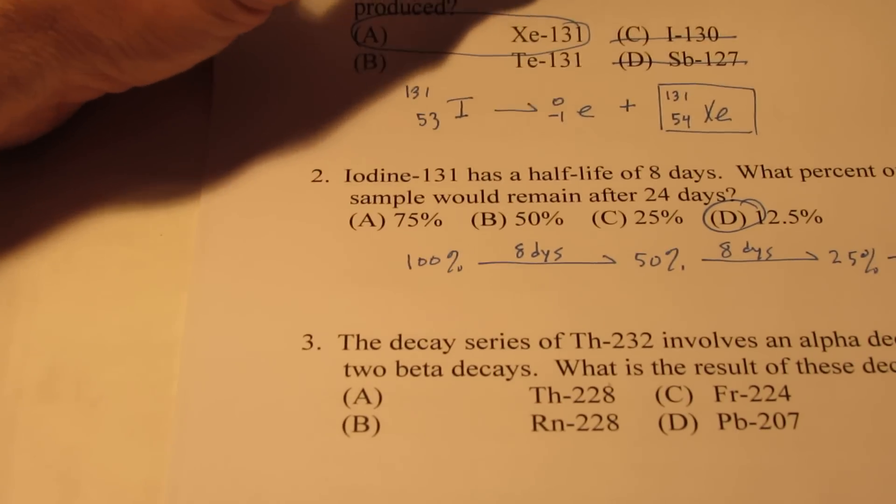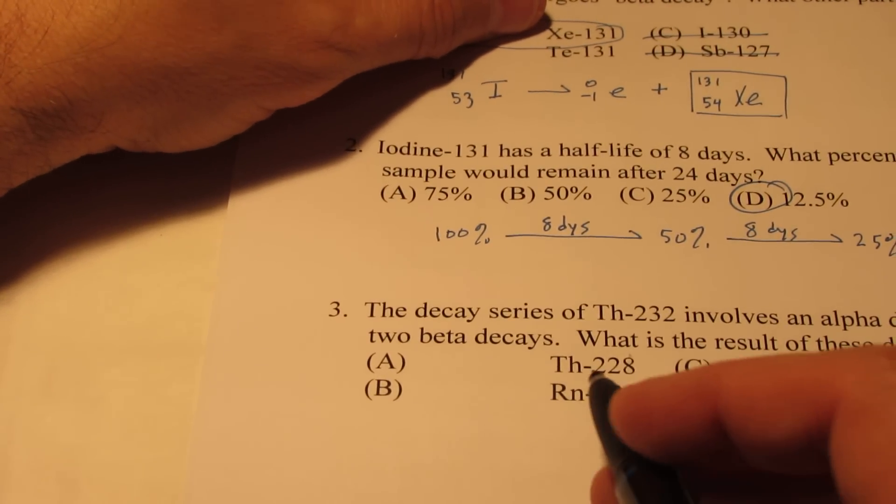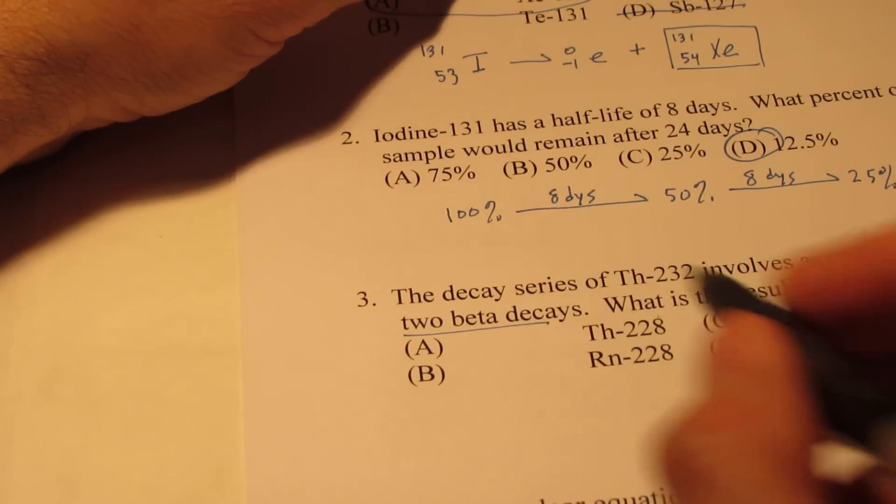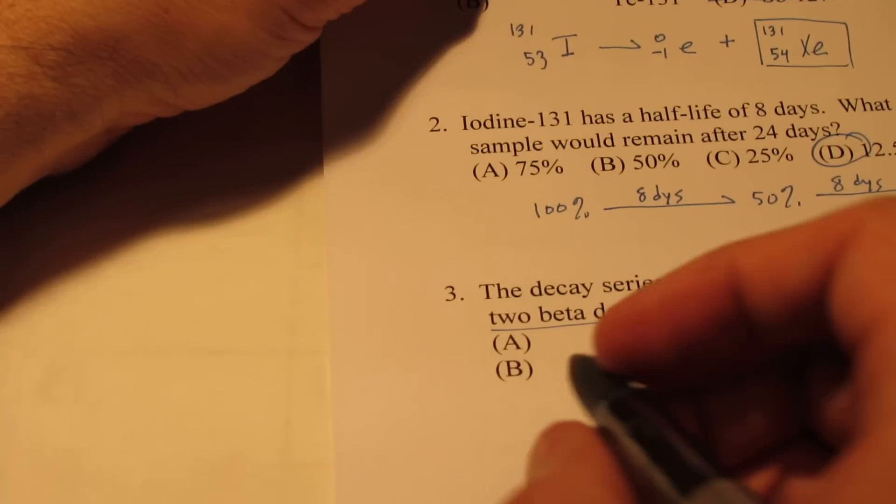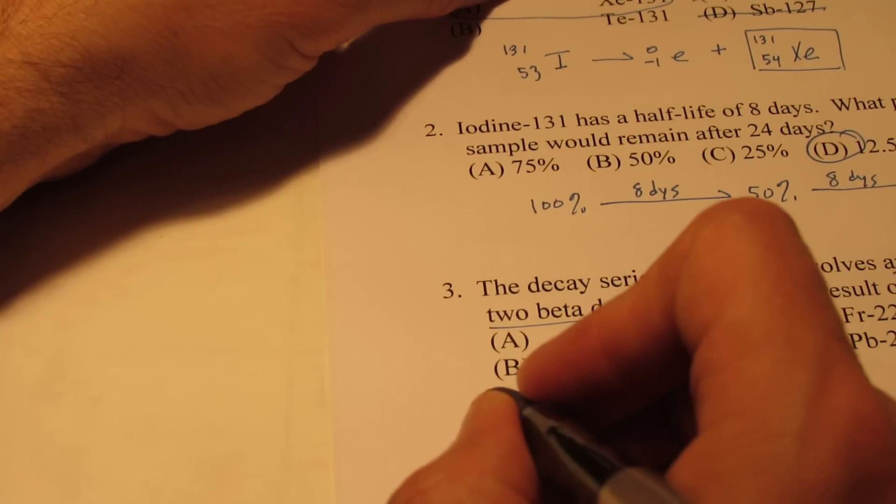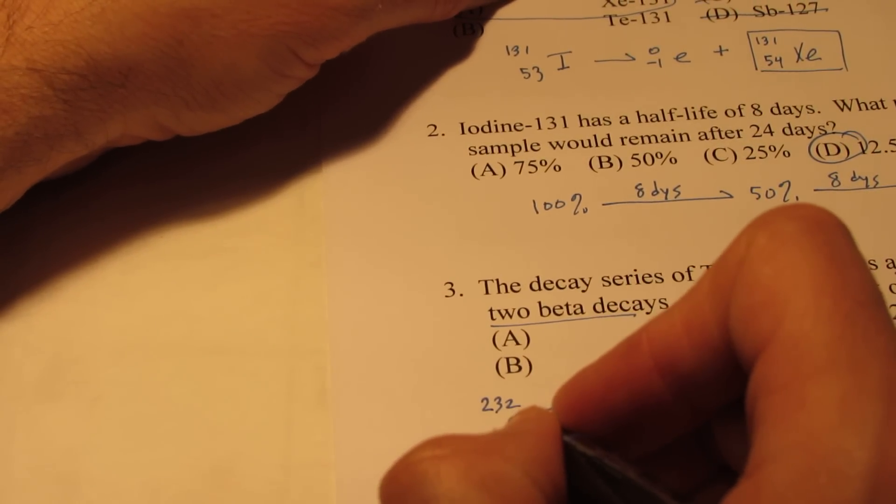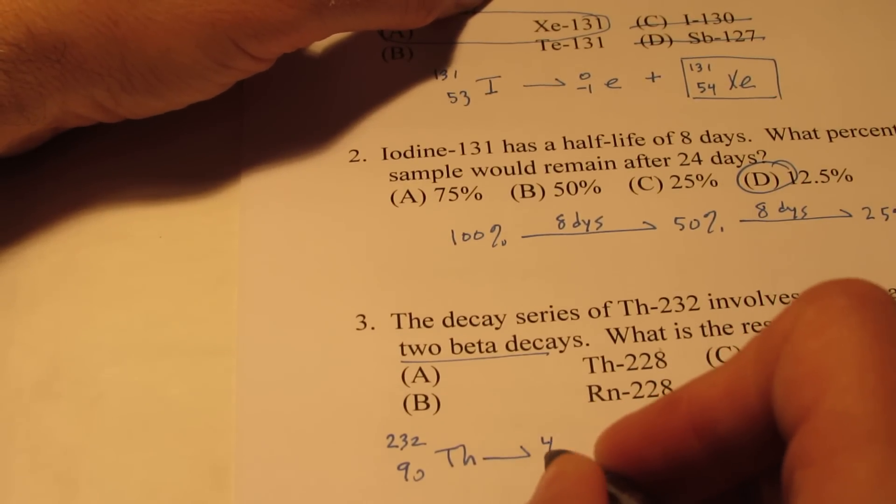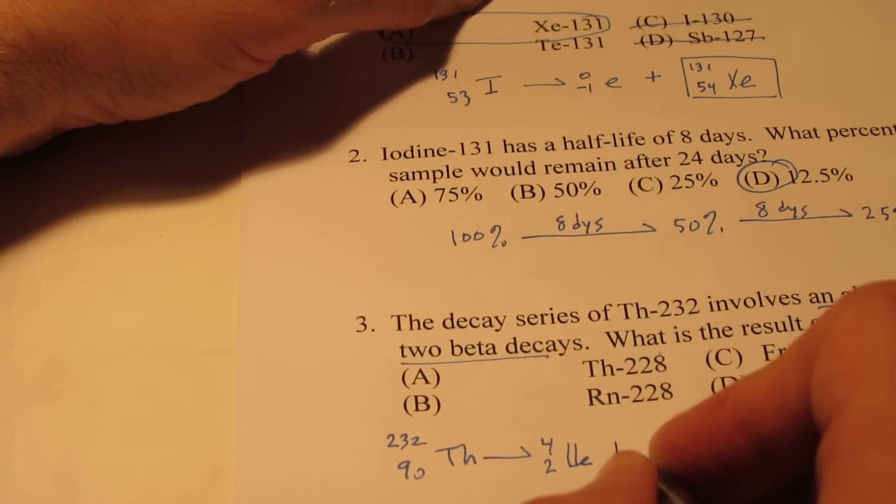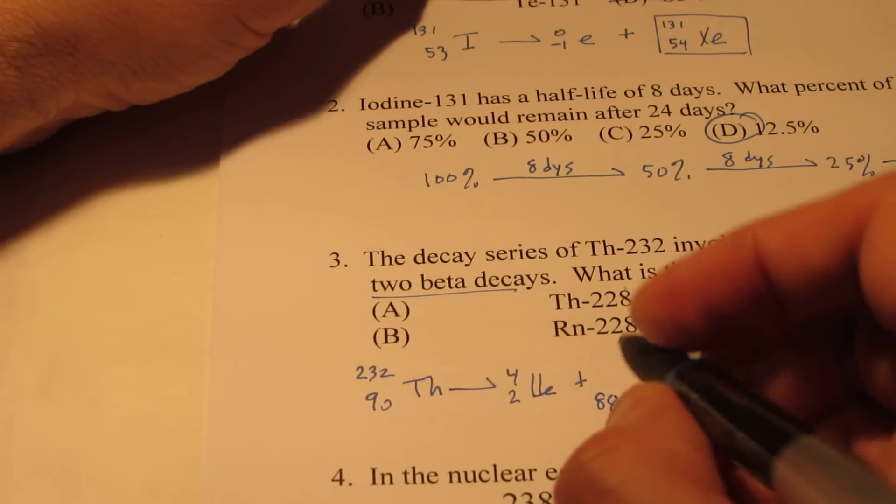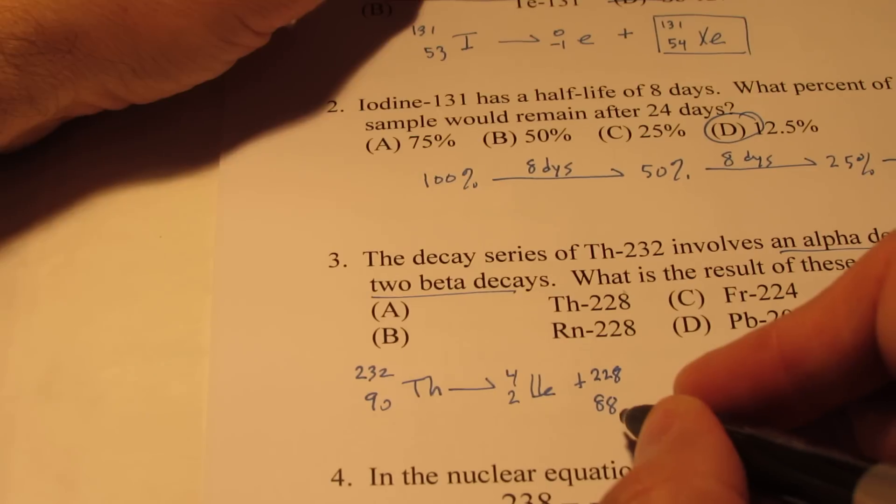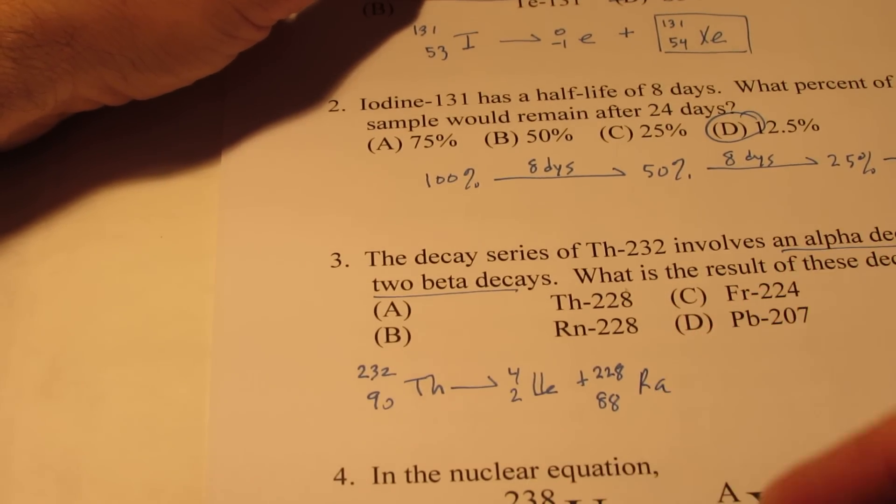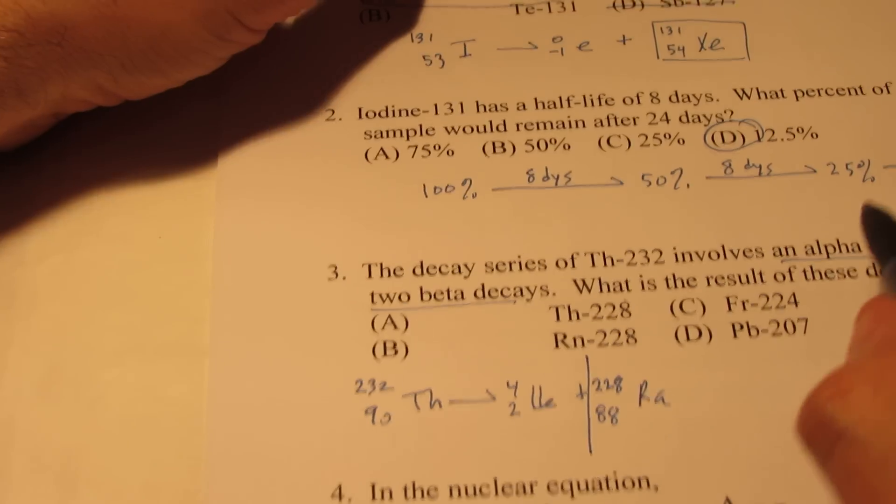Let's take a look at number three. This is interesting. We have the decay of thorium-232. It has one alpha decay and then two beta decays. What is the result of these decays? So if we start with thorium-232, the atomic number of thorium is 90. It involves an alpha decay. So let's kick off an alpha particle. The other particle will have an atomic number of 88 and a mass of 228. The atomic number 88 ends up being radium. So that's after my alpha decay.